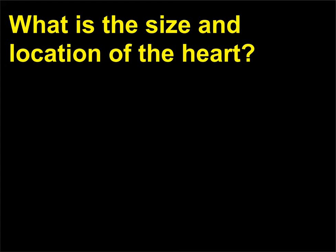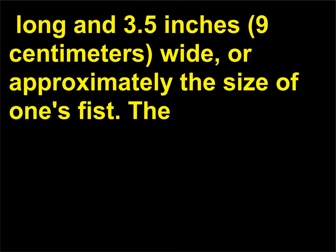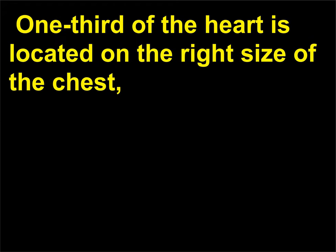What is the size and location of the heart? Heart size varies with body size. The average adult's heart is about 5.5 inches (14 centimeters) long and 3.5 inches (9 centimeters) wide, or approximately the size of one's fist. The heart is located just above the diaphragm, between the right and left lungs. One-third of the heart is located on the right side of the chest.